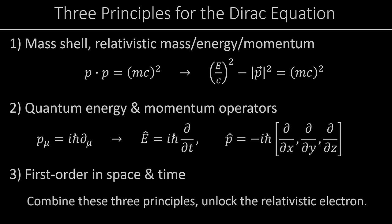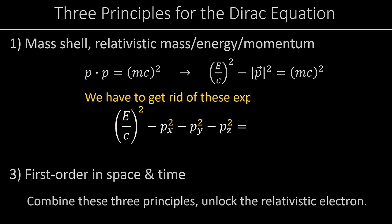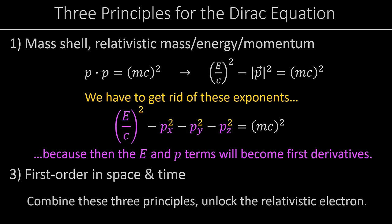How do we get these ingredients to mesh together? The first and second principles are pretty straightforward: the mass shell gives us an equation with energy and momentum, so we plug in the energy and momentum operators. The problem is that as long as the mass shell has energy and momentum squared, those operators will be second order — no good. What we want is to write the mass shell in a way that has energy and momentum only to the first power, so that plugging in the operators gives first derivatives.